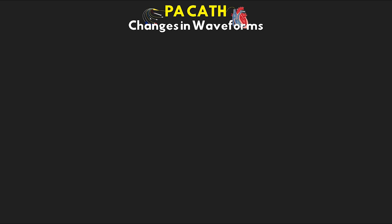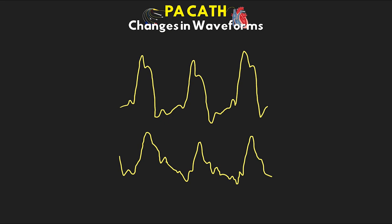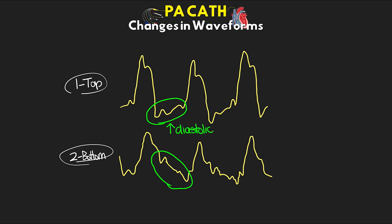Moving on, let's discuss how to tell the difference between a PA and an RV waveform. Looking at these two example waveforms, the key is to look at the diastolic portion: if we have an increasing diastolic pressure, we know this is a right ventricular waveform. If we have a decreasing diastolic pressure, this is our pulmonary artery waveform. With the pulmonary artery we also have that dicrotic notch, which can be a giveaway, but sometimes morphology can look like there's a dicrotic notch on an RV waveform too. So we really want to rely on whether diastolic pressure is trending up or down to differentiate RV from PA.